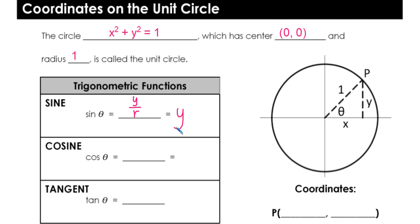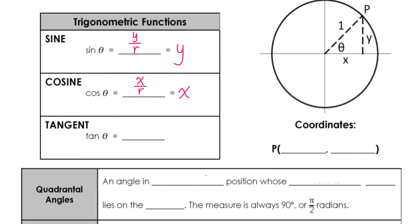The cosine, if you remember from before, is x over r. The radius is always going to be one, so x divided by one is just going to be x. The cosine of any point on the unit circle is always going to be the x-coordinate. And lastly, we have tangent, which is still going to be y divided by x. So when we're looking at any point along that unit circle, the x is going to be the cosine of theta and the y is going to be the sine of theta. It's a unique circle that allows us to find the trig functions somewhat easily.